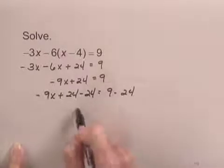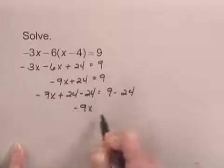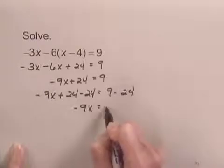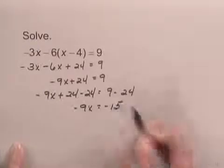On the left-hand side, I have negative 9x, and on the right-hand side, I have 9 minus 24, or negative 15.